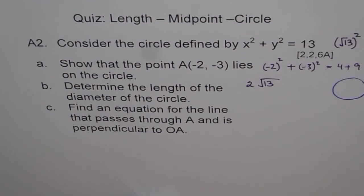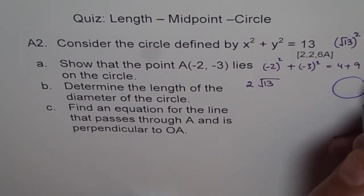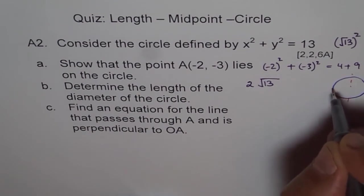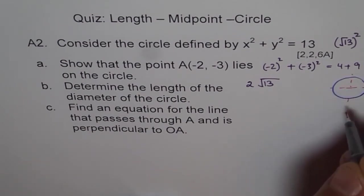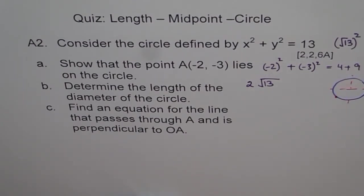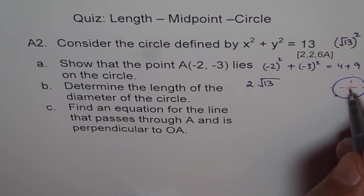Let's say we have a circle here. The center is 0. Minus 2, minus 3 is somewhere here. Let's say, right? That's the point A, right? So that means that's our radius.